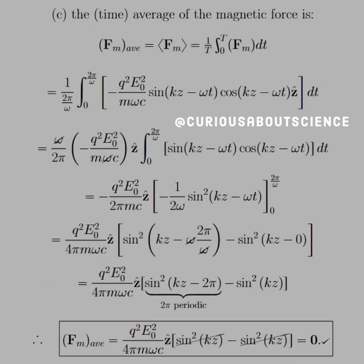For part C, the time average of the magnetic force: one period is 2π/ω. We take (1/(2π/ω)) times the integral from 0 to 2π/ω of everything with dt. Simplifying, with constants pulled to the front — the omegas cancel in the z-hat direction — and integrating with a u-substitution on the sine, which goes to cosine.